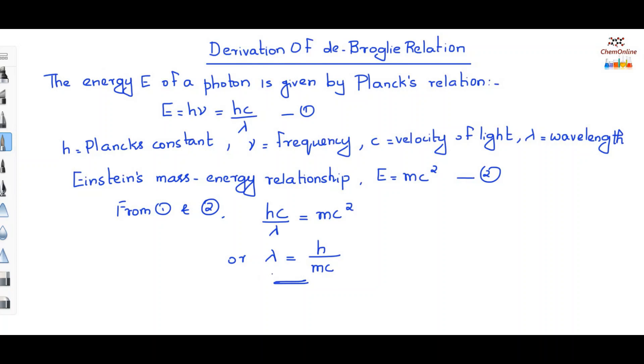That is, the wavelength of radiation is equal to h by mc. And de Broglie suggested that this equation, that is lambda equals h by mc, should be obeyed both by light and matter. So, if we consider a material particle of mass m moving with a velocity v, then the de Broglie wavelength of such a moving particle is given by lambda equals h by mv. And we know that m into v, that is, mass into velocity is equal to momentum. Therefore, we can write lambda equals h by p. This is called the de Broglie relation.